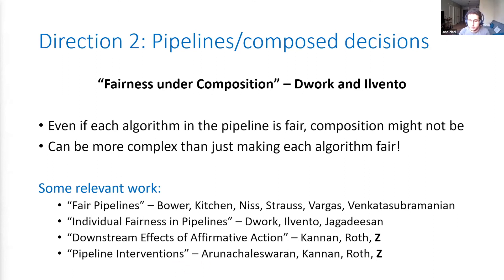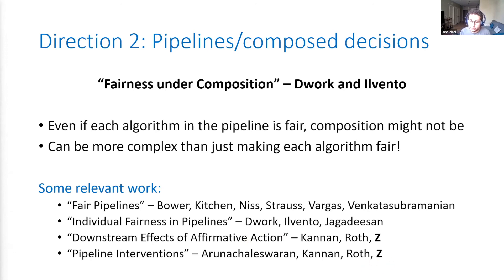There have been papers trying to look at those issues, including the 'Fair Pipeline' paper by Bower, Kitchen, Traub, Mehrotra, and Subramanian; a recent paper on individual fairness in pipelines by Dwork, Ilvento, and Jagadeesan; and two papers of my own with Eswaran, Sampath, and Arunachalam that also look at the compound effects of having several decisions in a pipeline.